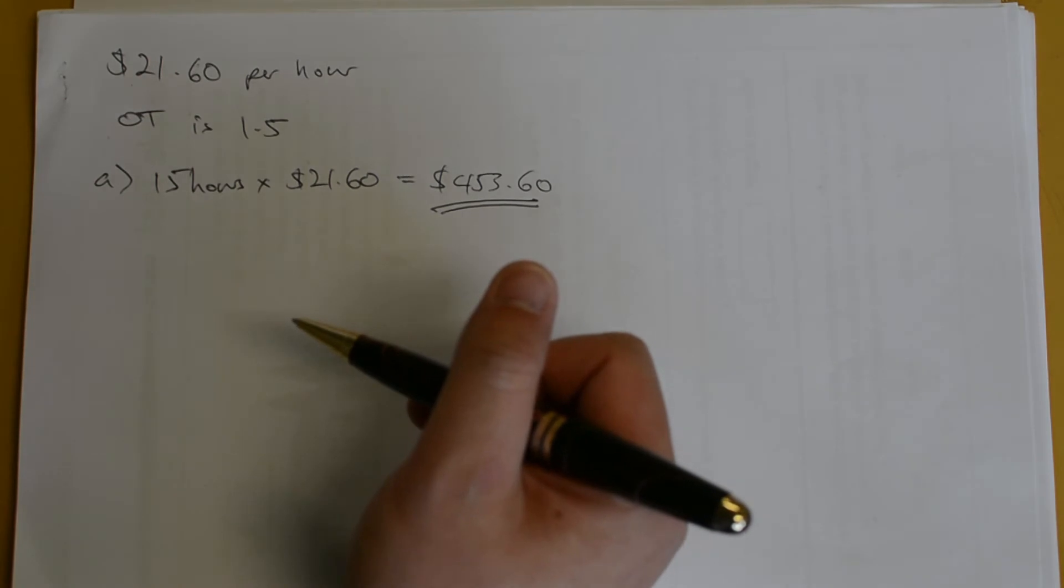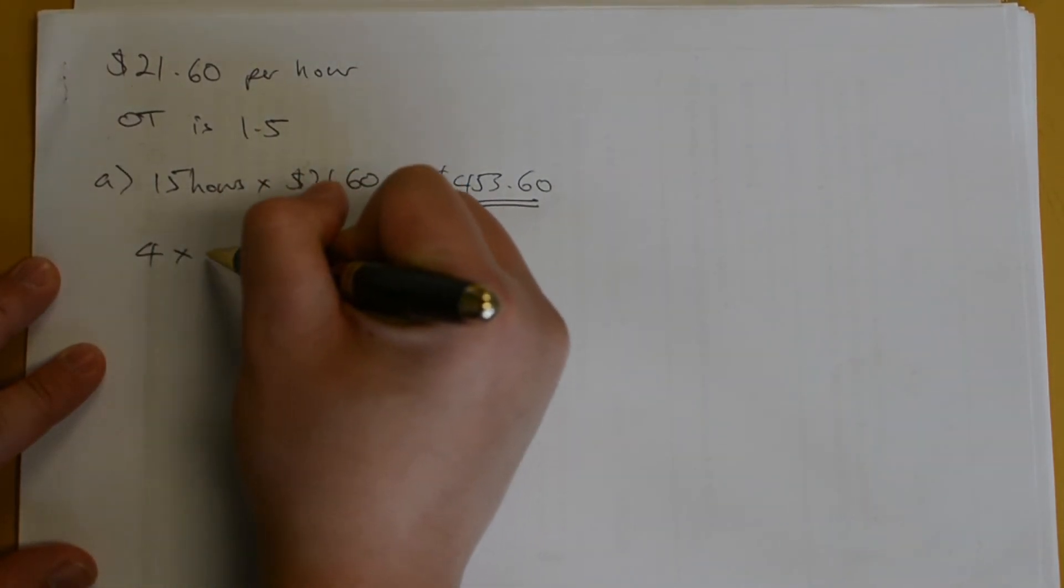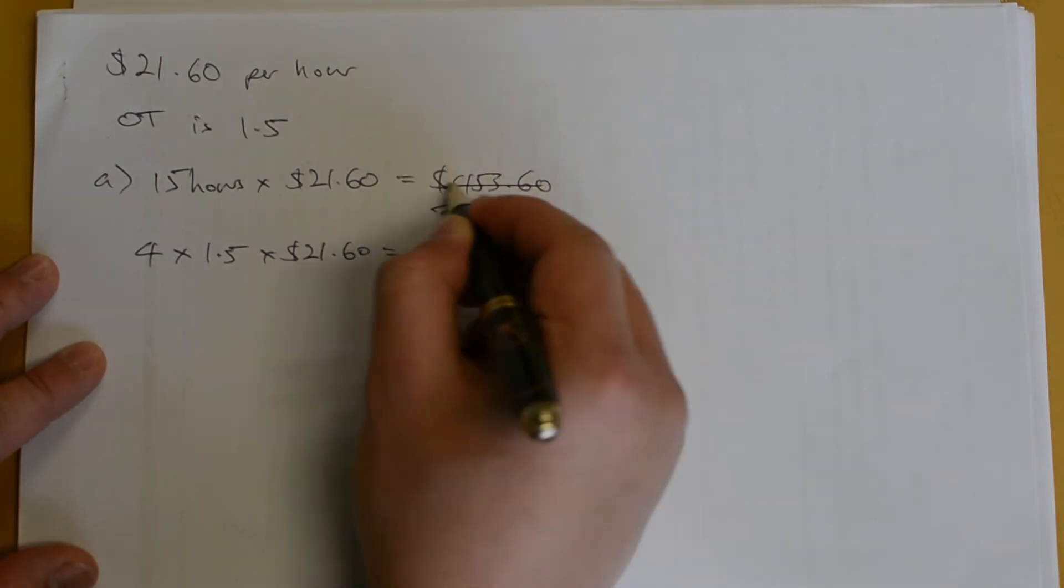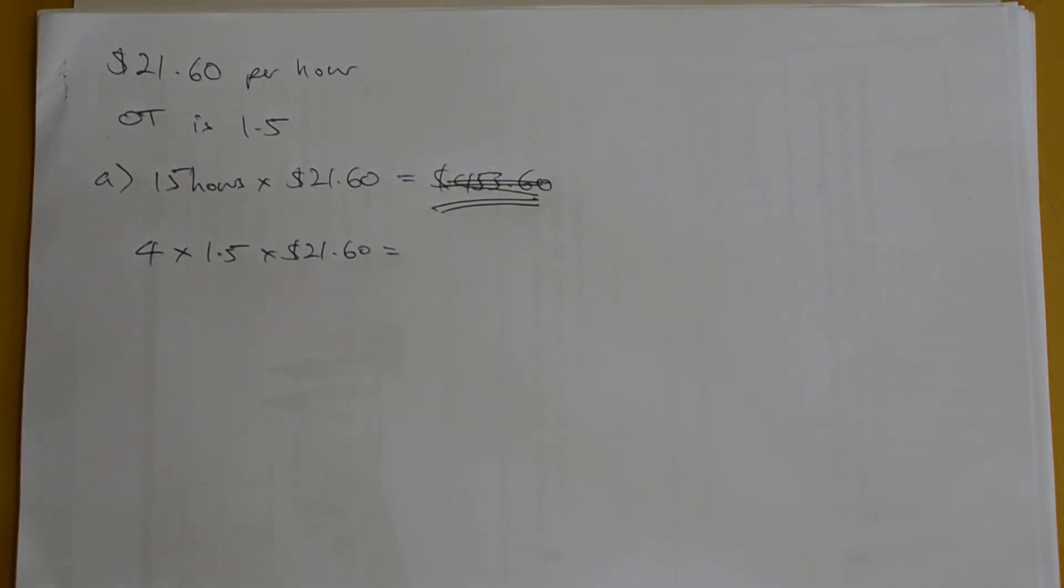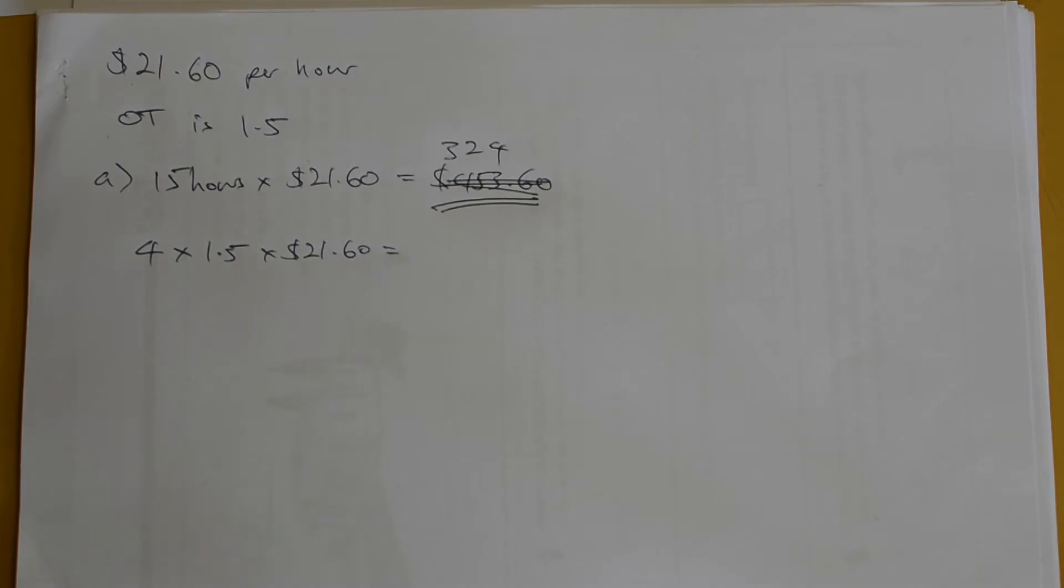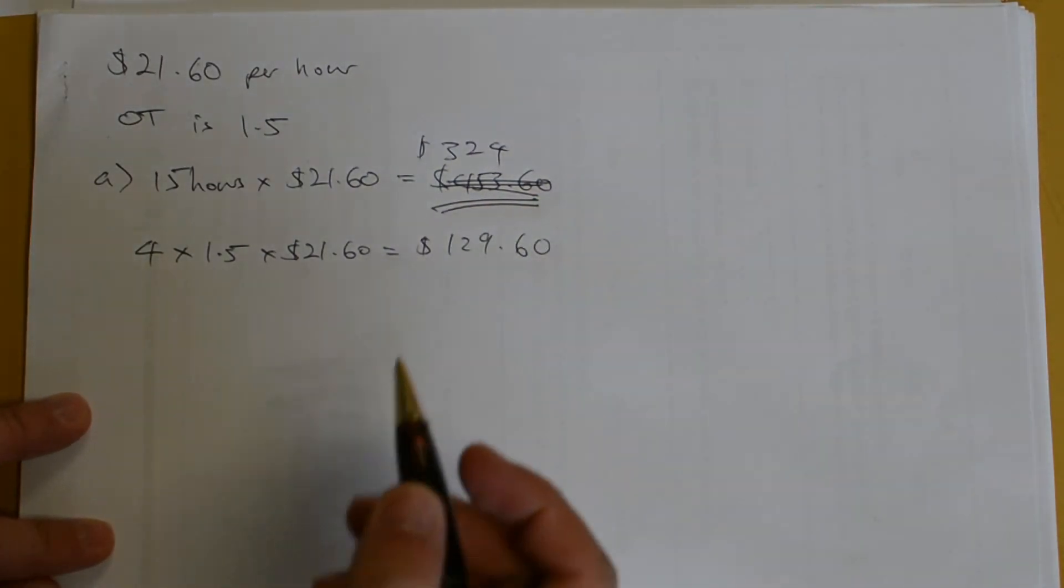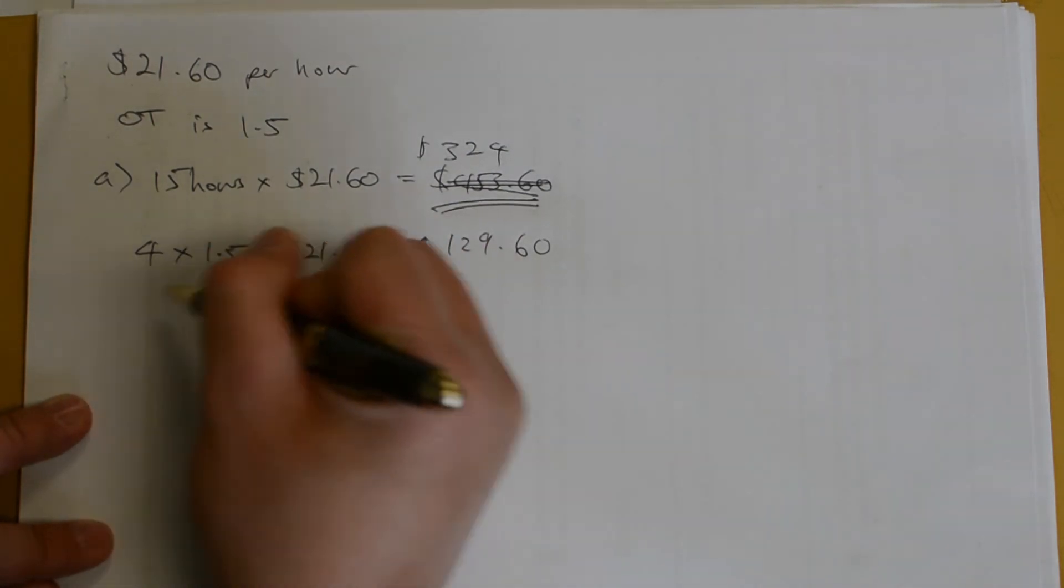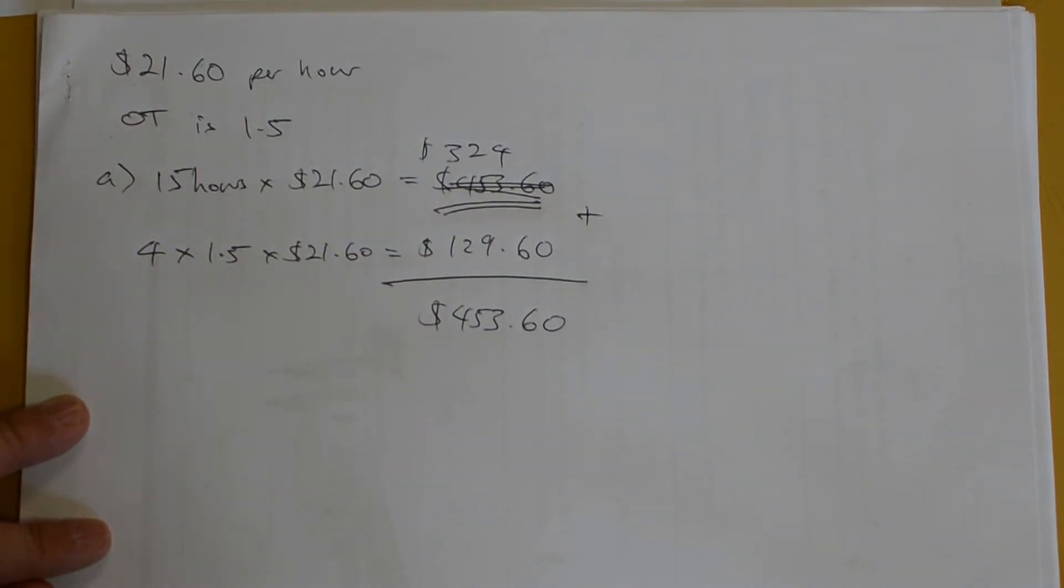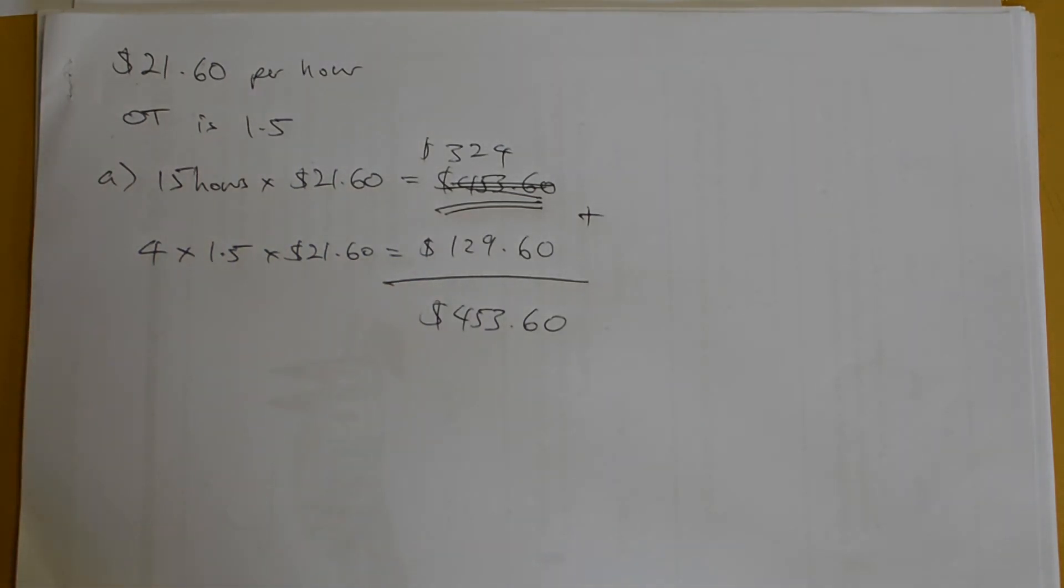So, that would be his weekly wage. Or is it? Well, we forgot his overtime. He works four hours of overtime. So, I'm going to times that by one and a half and by his hourly rate. 15 times by 21.6 will be $324. Together would be his weekly wage. And together, we will have $453.60. I've broken this part up into two. I've found his normal working hours here and his overtime rates here, and I added them together to find his weekly wage.